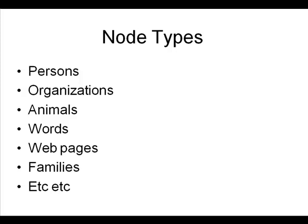The nodes in a network needn't be people. Lots of networks involve people, but they could be organisations, animals, worms, web pages, or families. Once you start thinking in a network way, you realise there are many situations where you can think about connections between different kinds of objects.